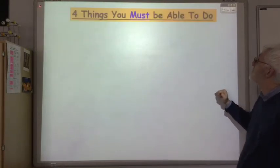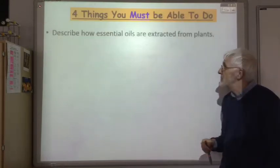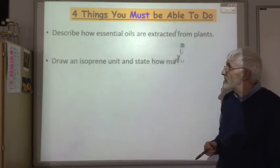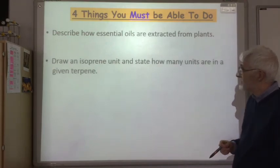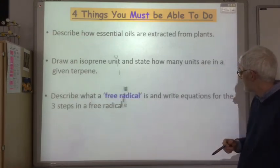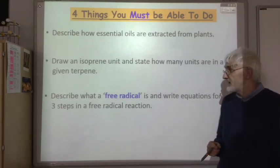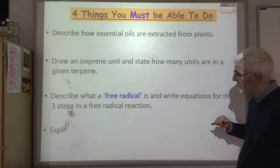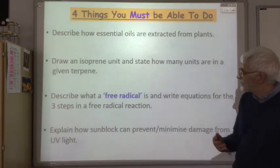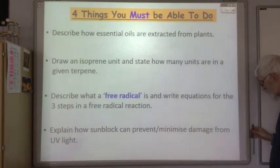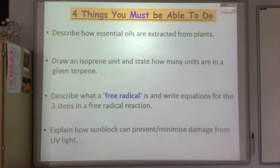Okay, so four things you should be able to do by the end of this section: describe how essential oils are extracted from plants, draw an isoprene unit and state how many units are in a given terpene, describe what a free radical is and write equations for the three steps in a free radical reaction—initiation, propagation, and termination—and explain how sunblock can prevent or minimize damage from UV radiation.